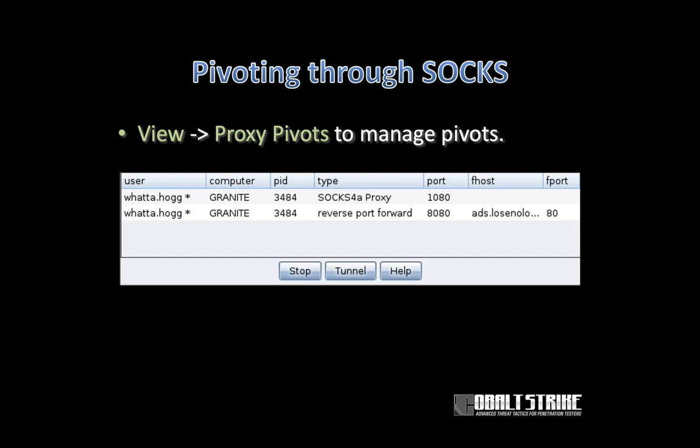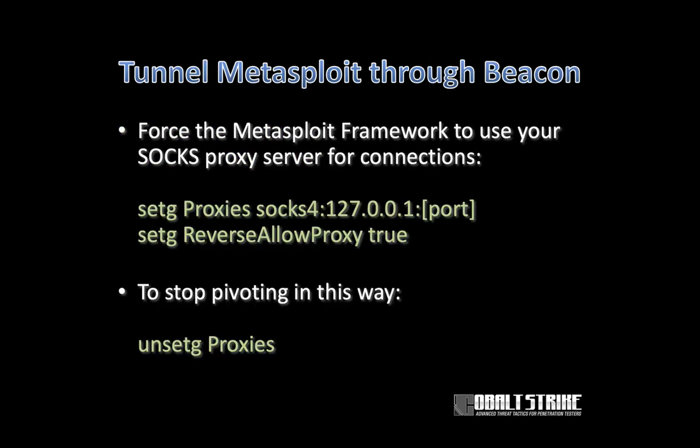After a while it becomes confusing keeping track of all proxy pivots. If you go to View, Proxy Pivots, you can see which sessions have proxy servers enabled, which port they're bound to, and you have the option to stop them there. The Metasploit Framework is an example of a SOCKS-aware application, and you can tunnel Metasploit traffic through a Cobalt Strike beacon session with SOCKS. Use 'setg proxies socks4: [team_server_IP]:[port]' and 'setg reverseallowproxy true'. The 'setg' command sets global sticky options in Metasploit. Use 'unsetg' to remove them.